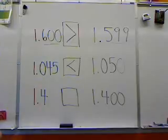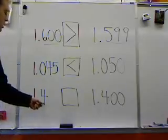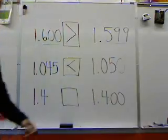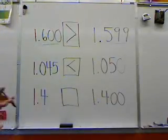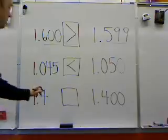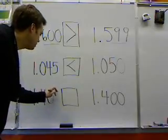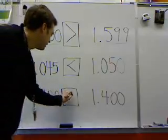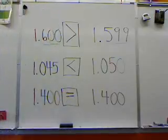When we get to this equation here, we can see that this is 1 and 4 tenths versus 1 and 400 thousandths. Well the question is, which of these is actually larger? Well, when we even it out, we soon discover that these two are exactly the same. They are in fact equal.